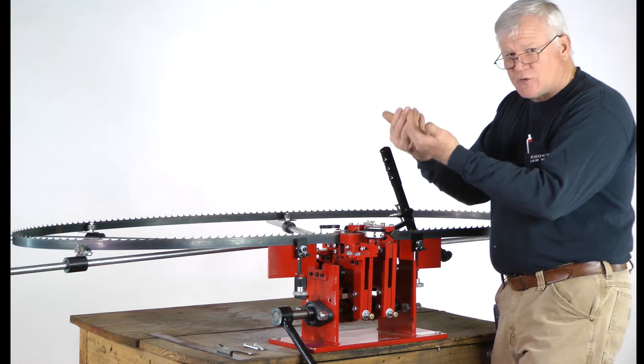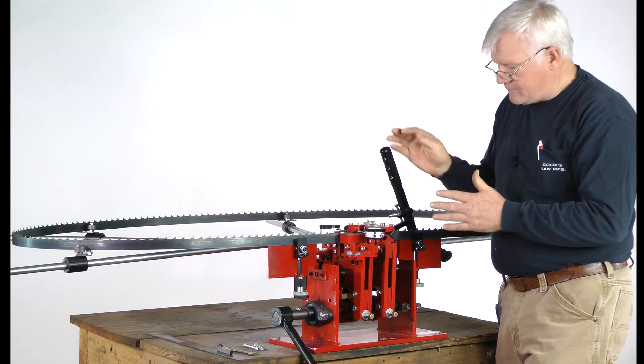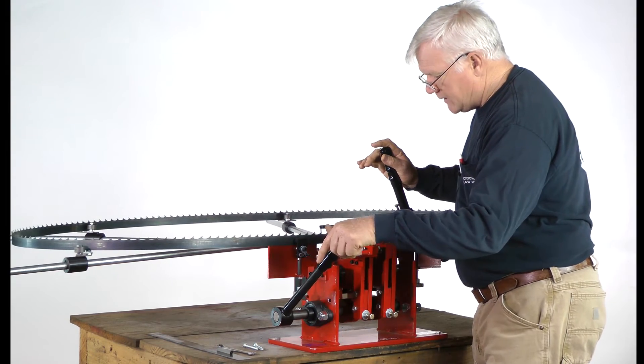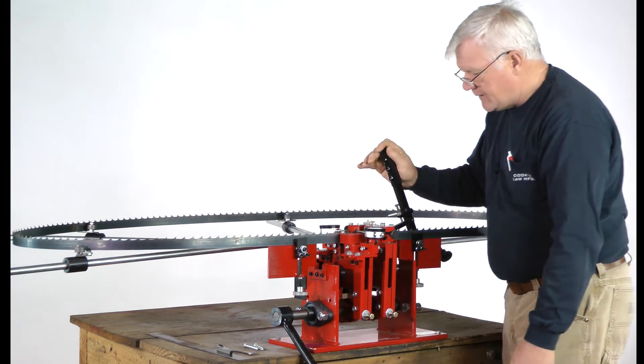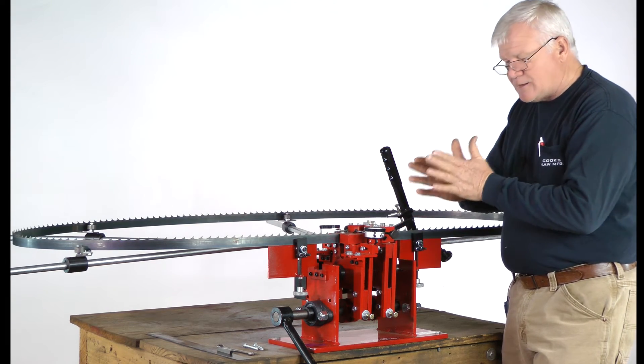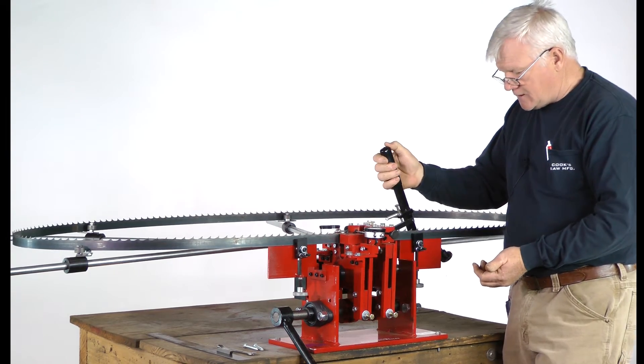If this blade is allowed to slip upward in any manner, then it gives a different set each time. So when we index this forward and hold here, then I come up with the handle and I get an accuracy of set because I'm able to hold it down in place and it's in the same location every time these jaws come together and set the teeth.